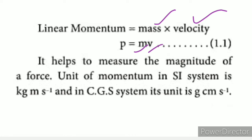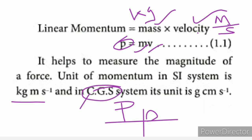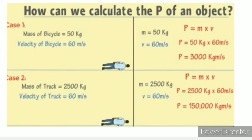Mass is represented by the symbol m and velocity by v (both small letters). Linear momentum helps measure the magnitude of a force — for example, 5 newtons or 3 newtons. The SI unit of linear momentum: mass unit is kilogram, velocity is meter per second, so the unit is kilogram meter per second (kg·m·s⁻¹). In the CGS system: grams, centimeters, seconds — the unit becomes gram·centimeter per second.